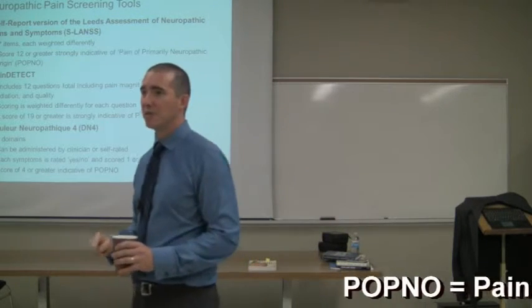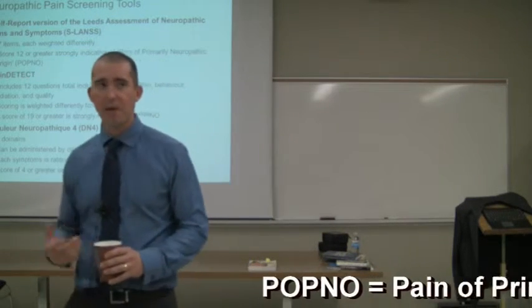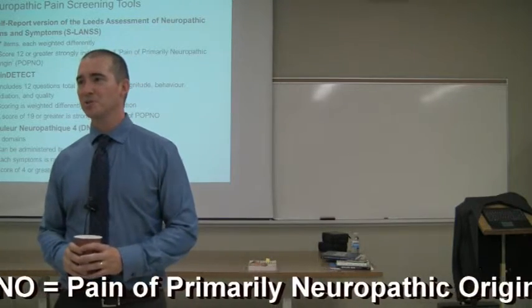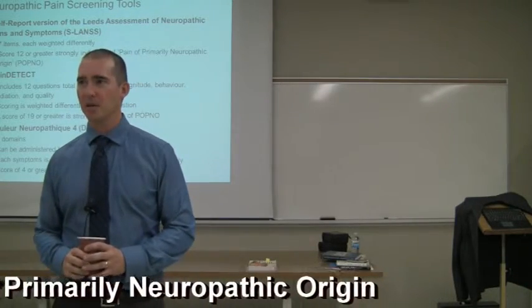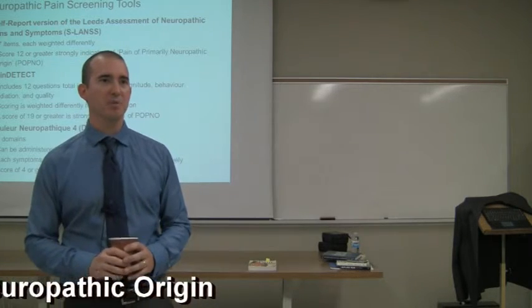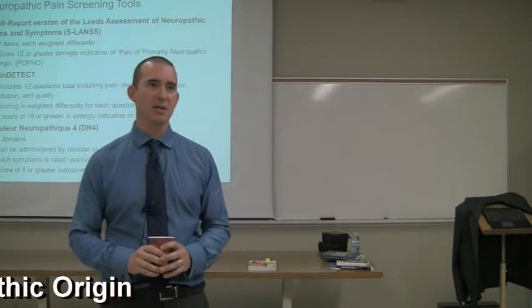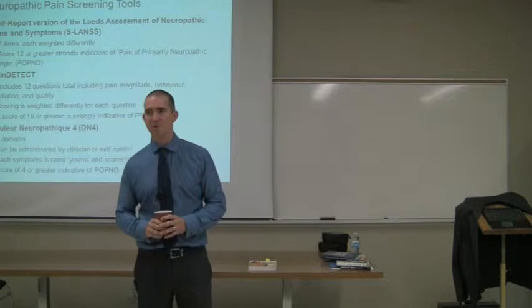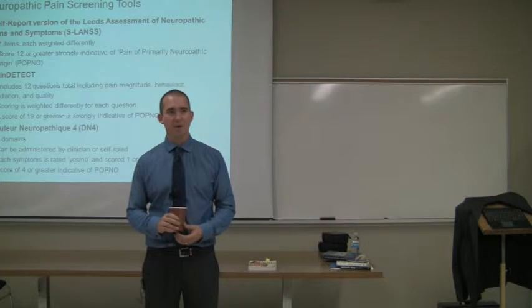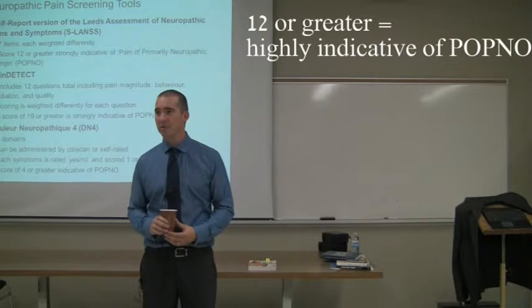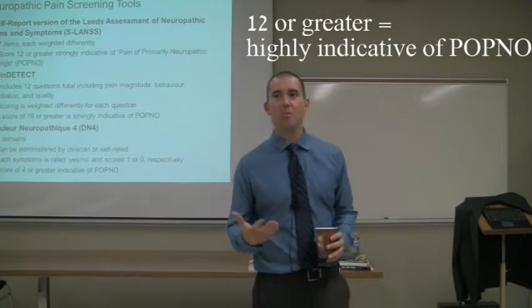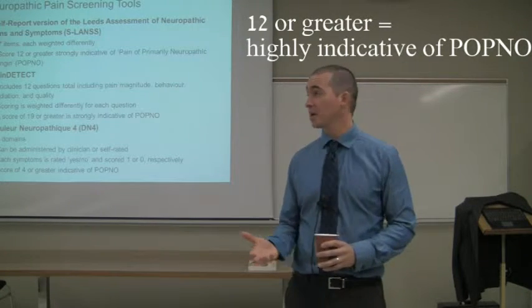This scale may be useful for identifying pain of primarily neuropathic origin. We used to call it a scale for identifying neuropathic pain, but people have decided to call it something more challenging — pain of primarily neuropathic origin. Nonetheless, a score of 12 or higher is generally a pretty good indication that there is a neuropathic component to this patient's pain.